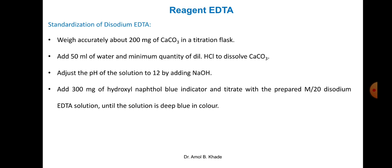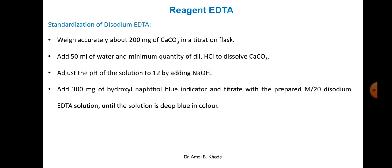We then add 300 mg of hydroxyl naphthol blue indicator. We can titrate with prepared 0.05 molar (M/20) disodium EDTA solution until the solution converts to a deep blue color. So this is the procedure for standardization of disodium EDTA, with calcium carbonate as the primary standard — although other primary standards such as pure zinc can also be used. Sodium hydroxide is used for pH adjustment and hydroxyl naphthol is the indicator.